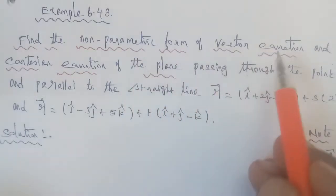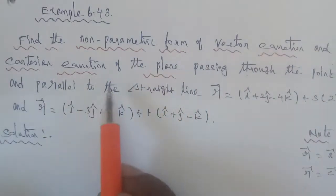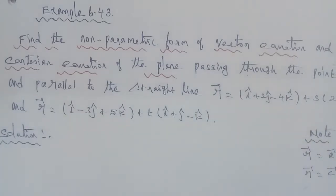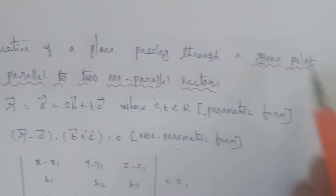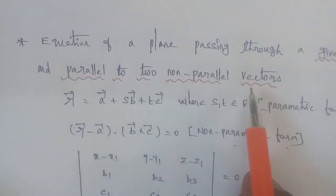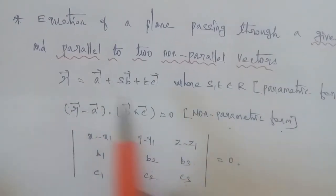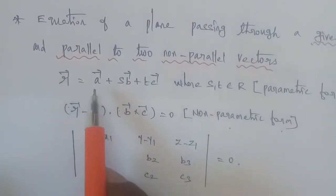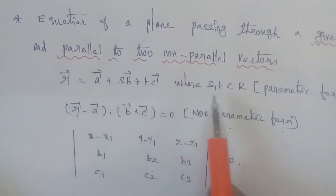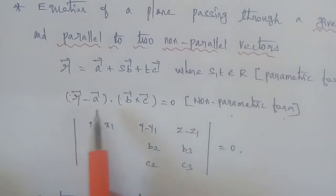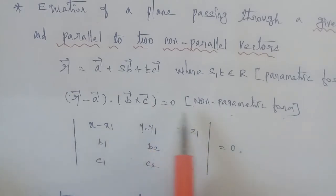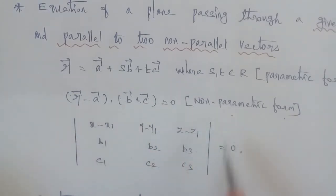Now we have the non-parametric form of vector equation and Cartesian equation. The formula for the plane passing through a given point with two direction vectors: parametric form is r vector equals a vector plus s·b vector plus t·c vector, where s, t belong to R. The non-parametric form formula is (r vector minus a vector) dot (b vector cross c vector) equals 0.